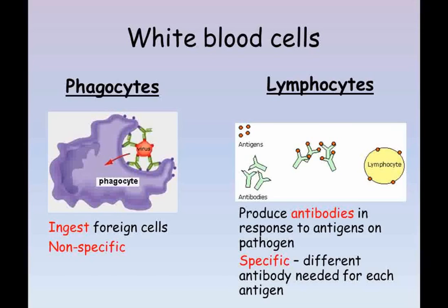Rather than produce large volumes of all possible antibodies at all times, lymphocytes instead wait until an antigen that it recognizes appears and then increases the amount of a relevant antibody that it's producing. This graph shows what happens to the level of antibody in blood during an infection. A short time, known as the lag time, after the antigen is introduced, the level of antibody in the blood increases. Because this destroys the pathogen carrying the antigen, there is no longer the need for such a high level of antibodies, and so the lymphocytes stop producing them as much.